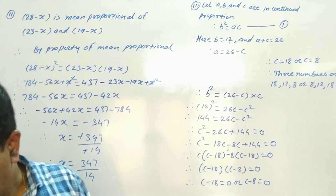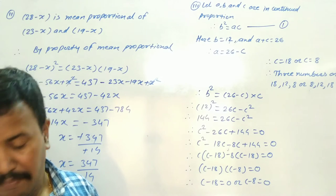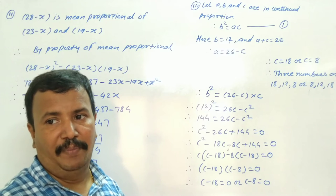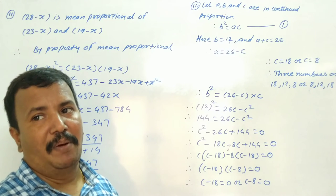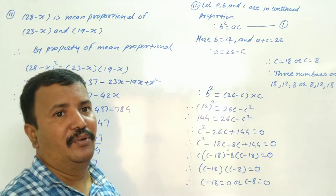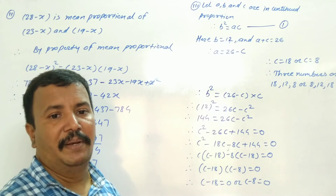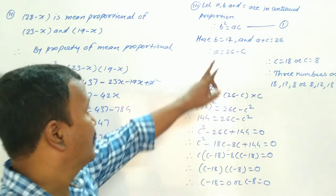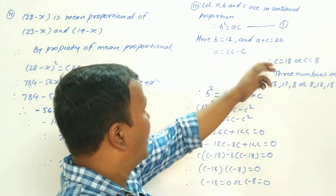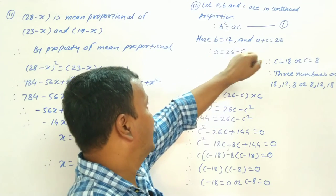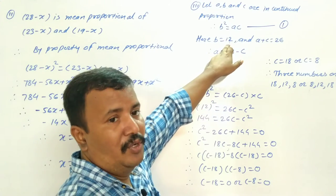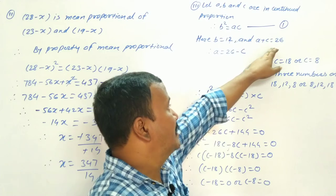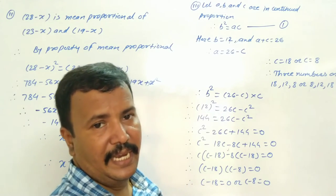Next question: three numbers are in continued proportion, whose mean proportional is 12. The sum of the remaining two numbers is 26. Let a, b and c be in continued proportion, so b squared equals a times c. Here b equals 12, and a plus c equals 26.